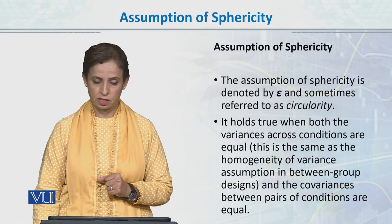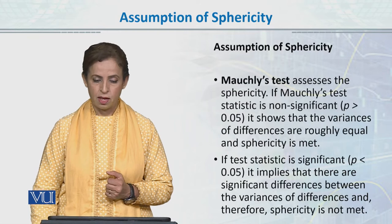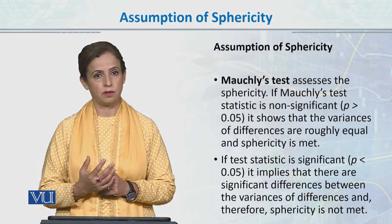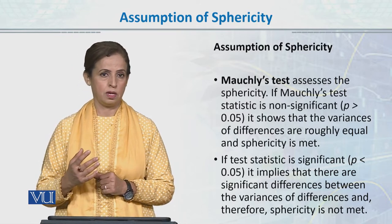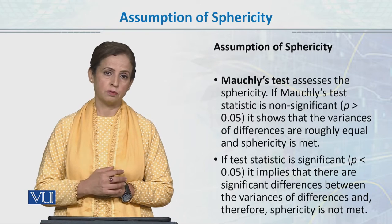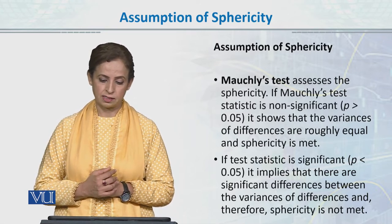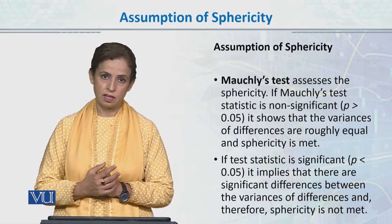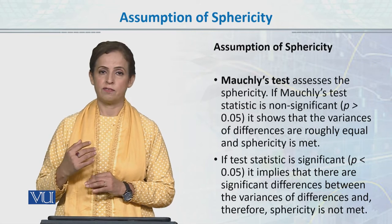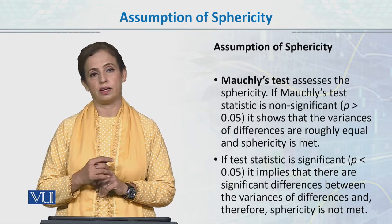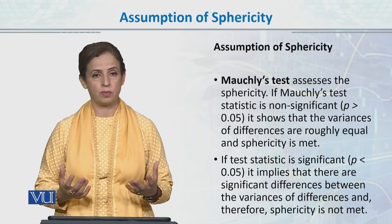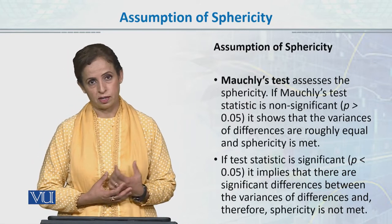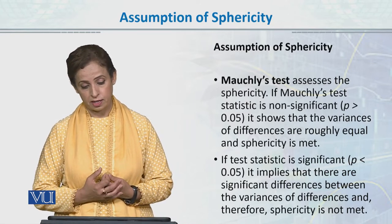And the co-variances between pairs of conditions are also equal. इसके लिए जैसे हम Levene's test use करते थे homogeneity of variance के लिए, वैसे ही sphericity के assumption के लिए हम Mauchly's test use करते हैं। Mauchly's test assesses sphericity. If Mauchly's test statistic is non-significant — यानि value greater than 0.05 — तो assumption meet होती है।